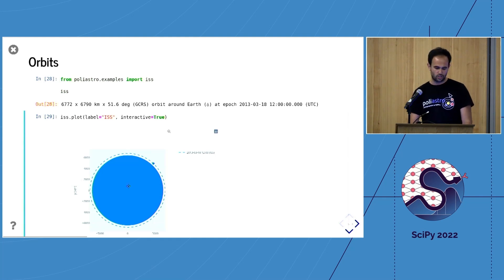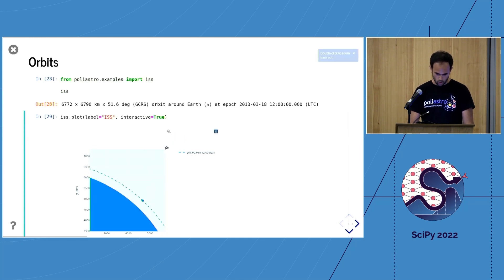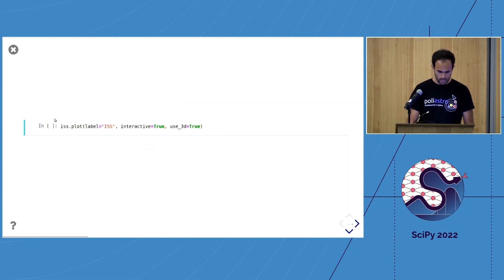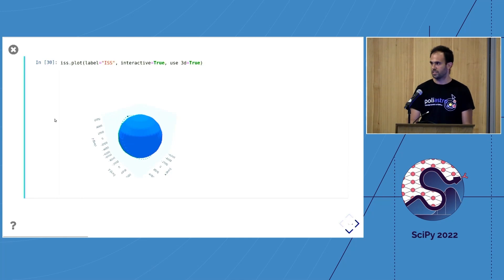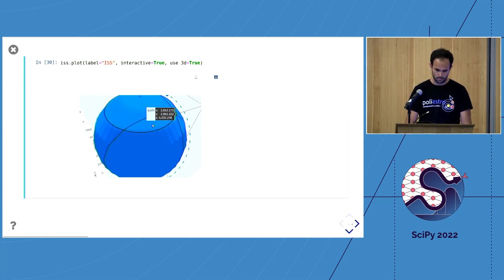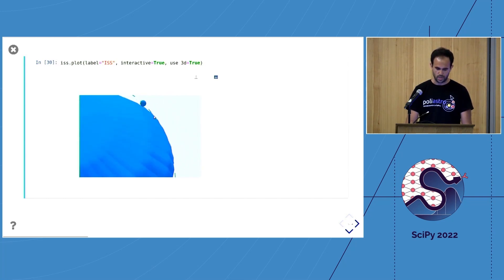There's a fancy .plot method that allows me to get a very quick representation of the orbit itself. It's not super high fidelity like you can see the coastline of the earth, but at least it's interactive—I can zoom, I can pan, I can move around. This is all based on Plotly, which I love. Apart from two-dimensional representation, we also have three-dimensional representation, so you can do the same schematic visualization in 3D.